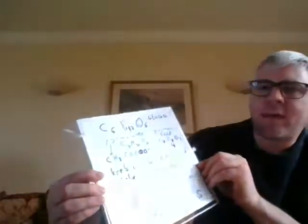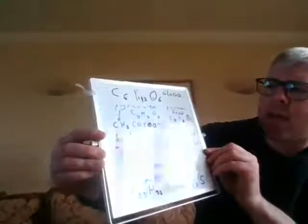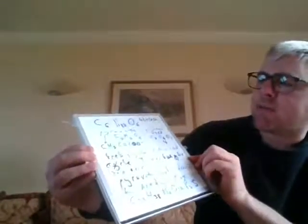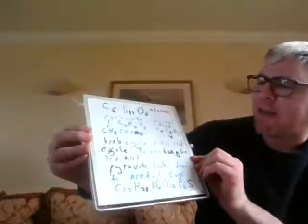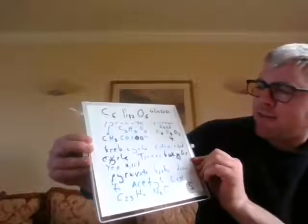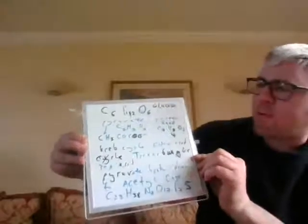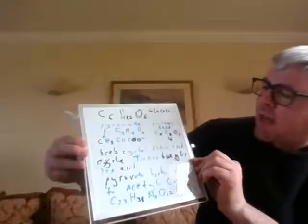The glucose compound is C6H12O6. The pyruvate compound is C3H3O3, also written as C3H3 - CO-CO-CO - where the three O's represent oxygen. Pyruvate acid has four hydrogen atoms as opposed to the three that pyruvate has, so pyruvate acid is three carbons, four hydrogens, and three oxygens: C3H4O3.